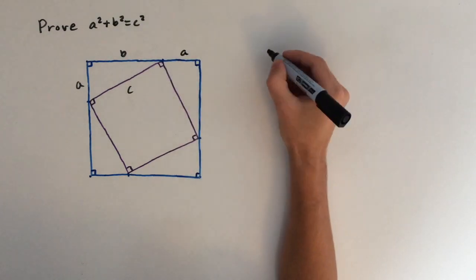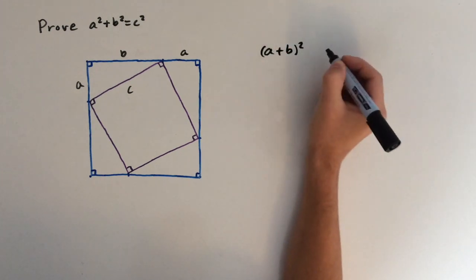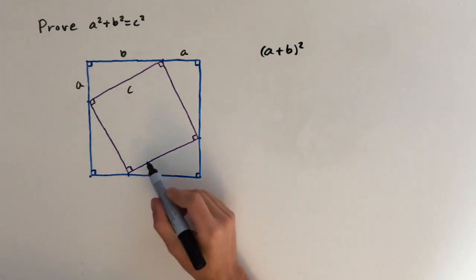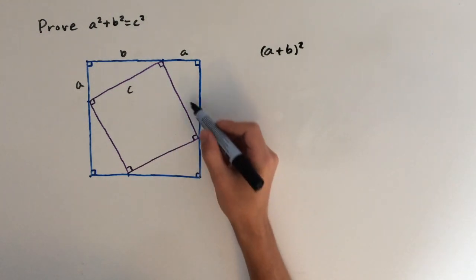And that means that the area of the blue square will be A plus B squared. Now we can also express this as the area of the purple square plus the area of the four triangles.